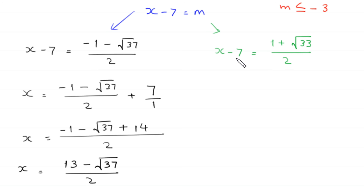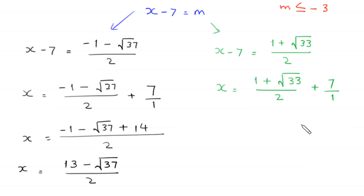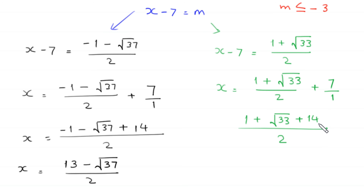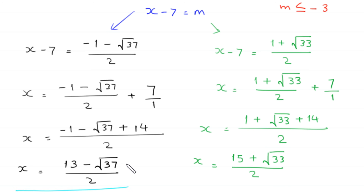For the second valid value m equals (1 + √33)/2, we have x minus 7 equals (1 + √33)/2. Moving the 7 to the right-hand side and taking the LCM of 2 and 1, which is 2: x equals (1 + √33 + 14)/2, so x equals (15 + √33)/2. Therefore we have two solutions to this equation.